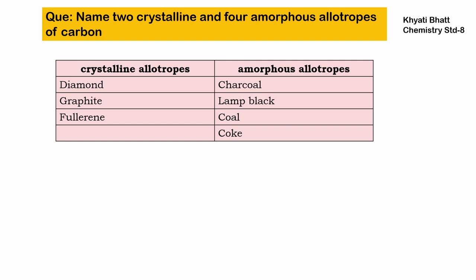Examples of crystalline allotropes of carbon are diamond, graphite, and fullerene (C60 molecule). Amorphous allotropes of carbon are charcoal, lamp black, coal, and coke.